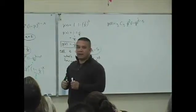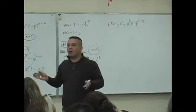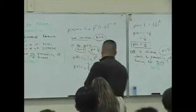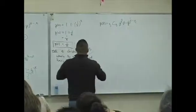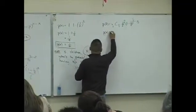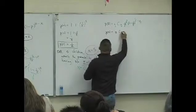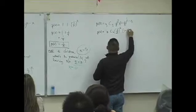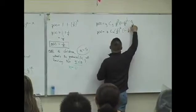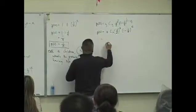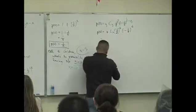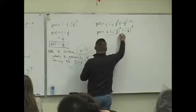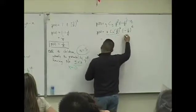So P of 0 is 5C0 times 1/2 to the 0 power times (1 minus 1/2) to the 5 minus 0, which is 5. We can clean this up: 5C0 is 1, 1/2 to the 0 is 1, 1 minus 1/2 is 1/2. So this is 1/2 raised to the fifth power.